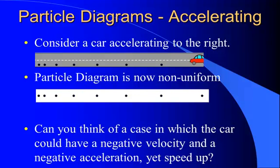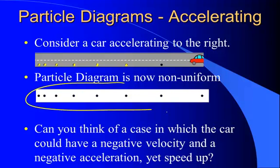If instead your car was accelerating to the right, when you were first starting out at low velocity the oil drops would be closer together, and over time they get further and further apart as you go faster and faster at a higher and higher velocity. Your particle diagram is now non-uniform. That particle diagram — the ticker tape or dot diagram — shows you a car that's accelerating to the right.